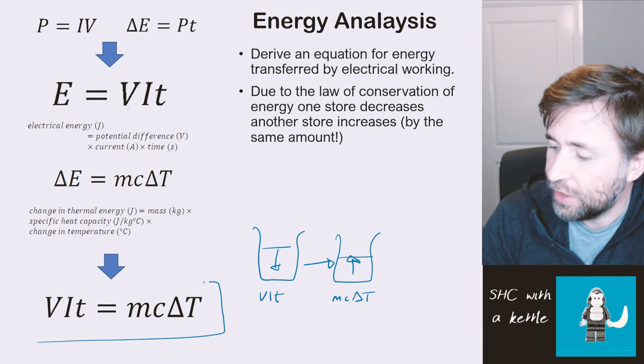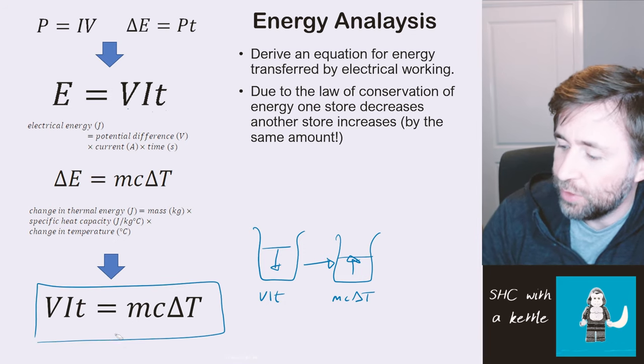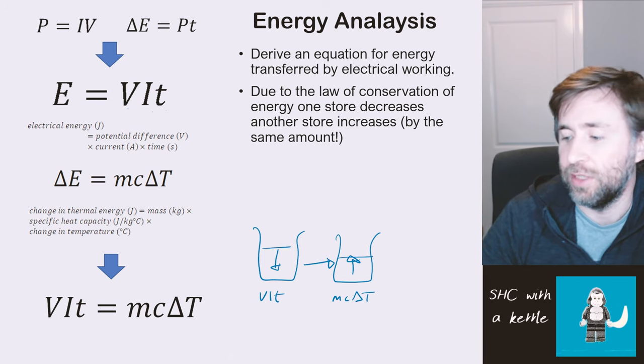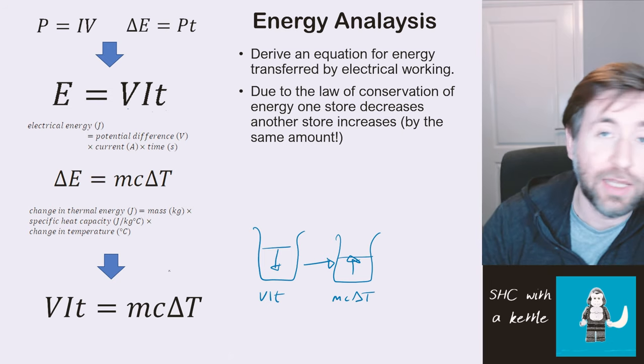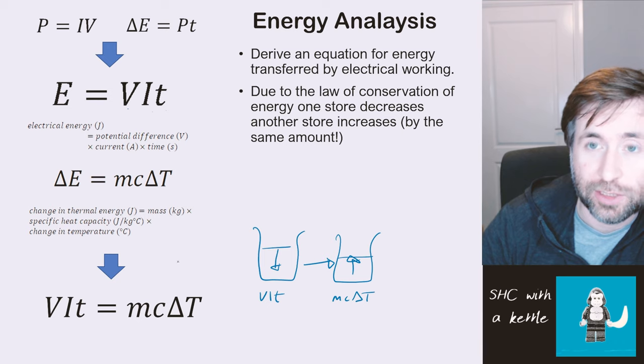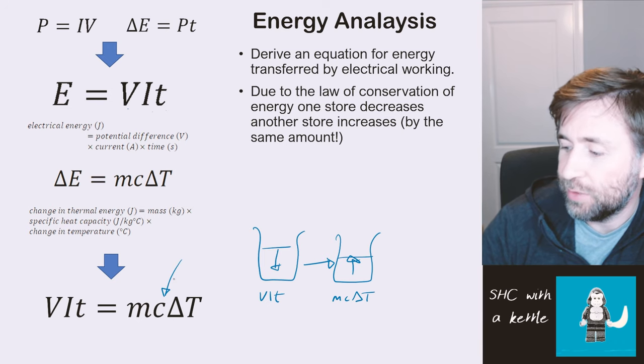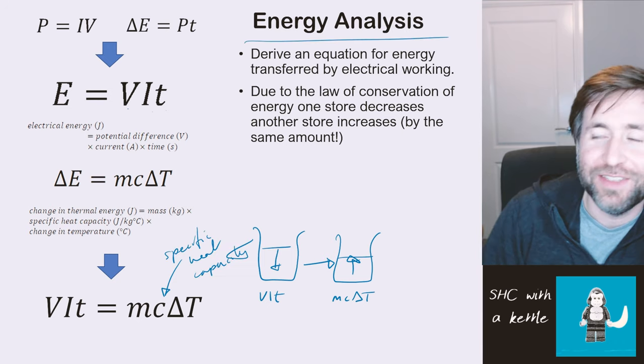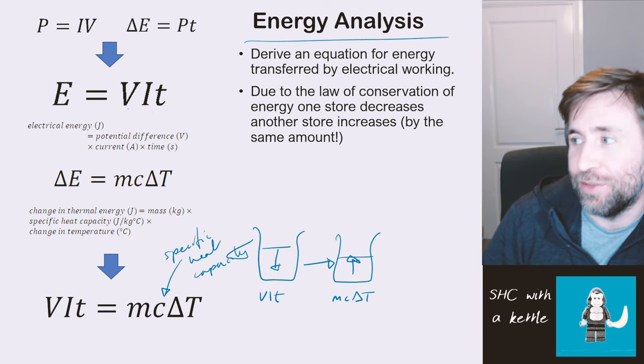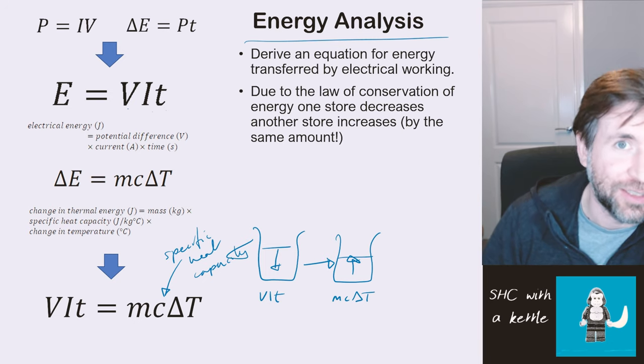What we're essentially saying is that this is the case. We're using our energy analysis to derive an expression which has everything that we're measuring and the thing that we want to work out, the final result of the experiment, which is C, specific heat capacity. This is the principle of energy analysis, and you're using this to work out the specific heat capacity.